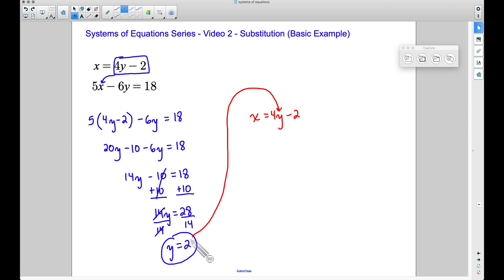So therefore we have X equals 4 times that Y value of 2 minus 2. And if we work this out, we get X equals 4 times 2 is 8, 8 minus 2 is 6. So this is our value of X.